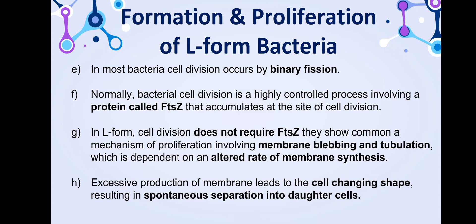Most bacteria divide by binary fission, which is a highly controlled process involving a specific protein called FtsZ that accumulates at the site of cell division. However, in L-forms, cell division does not require FtsZ. Instead, they show a common mechanism of proliferation involving membrane blebbing and tubulation, dependent on an altered rate of membrane synthesis. Excessive membrane production causes the cell to change shape, resulting in spontaneous separation into daughter cells of very varied sizes — from very tiny to very large.